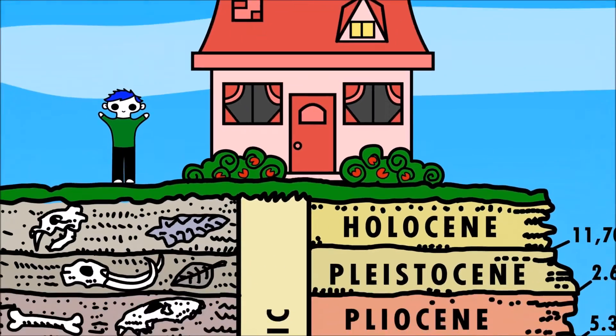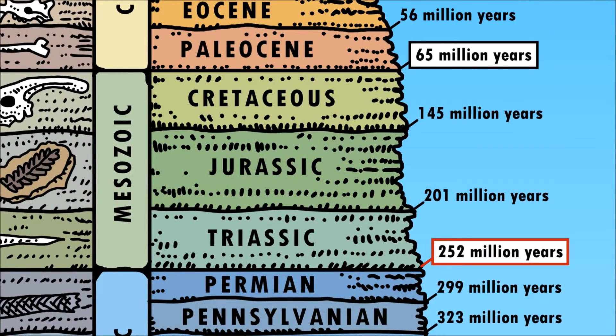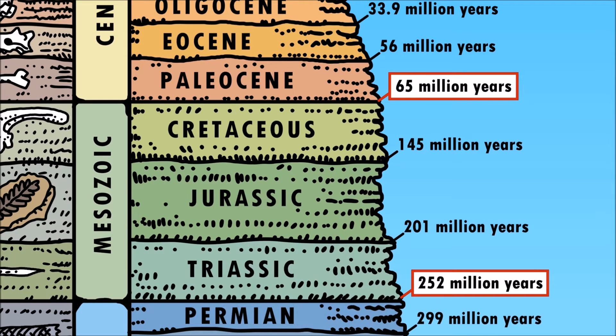Dinosaurs roamed the Earth millions of years ago. From over 250 million years ago to about 65 million years ago.